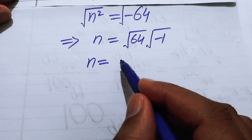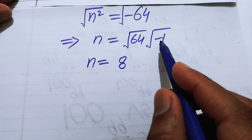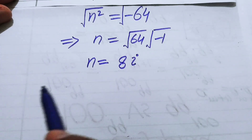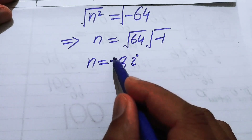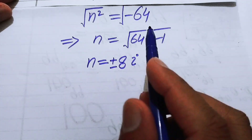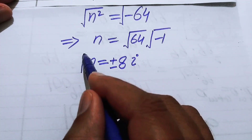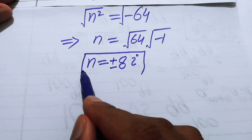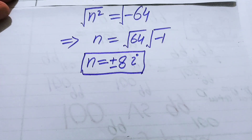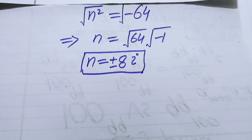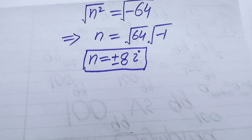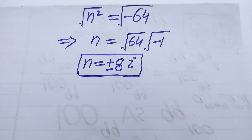√64 equals 8 and √(−1) equals i (iota). We include the plus-minus sign because we squared both sides during the solution, so the two roots of the given problem are n equals plus or minus 8i. This is our final answer. Thank you so much for watching — please subscribe to my channel for more exciting videos.